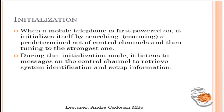Initialization is when the phone is powered on and initialized by searching for a predetermined control channel. If it knows that control channel — for example, if you are accustomed to living in the southern parts of Trinidad and Tobago — it will tune in to the strongest channel. The visitor location register initializes first, then the control channel retrieves system and setup information from the home location register, and your phone comes online waiting for access or a page.